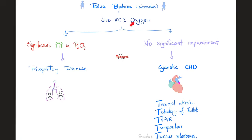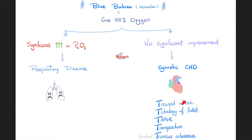How can I tell the difference? Give oxygen. If giving oxygen corrected the underlying problem, it means it was a lung disease — because you just replaced the lung's function. But if you give oxygen and get it into the body and the baby is still blue, it means there is no distribution. The heart failed to pump all of that lovely oxygen to the tissues. Causes here include cyanotic congenital heart diseases, as we have discussed before.